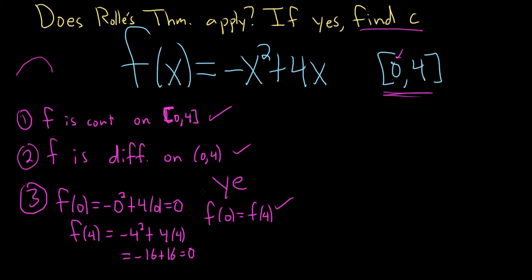So the answer here is yes, the theorem does apply. We have continuity on the closed interval, differentiability on the open interval, and the function values at the endpoints are exactly the same. So by Rolle's theorem, there is some number c between 0 and 4 such that the derivative is 0. So to find c, all you do is take the derivative and you set it equal to 0.